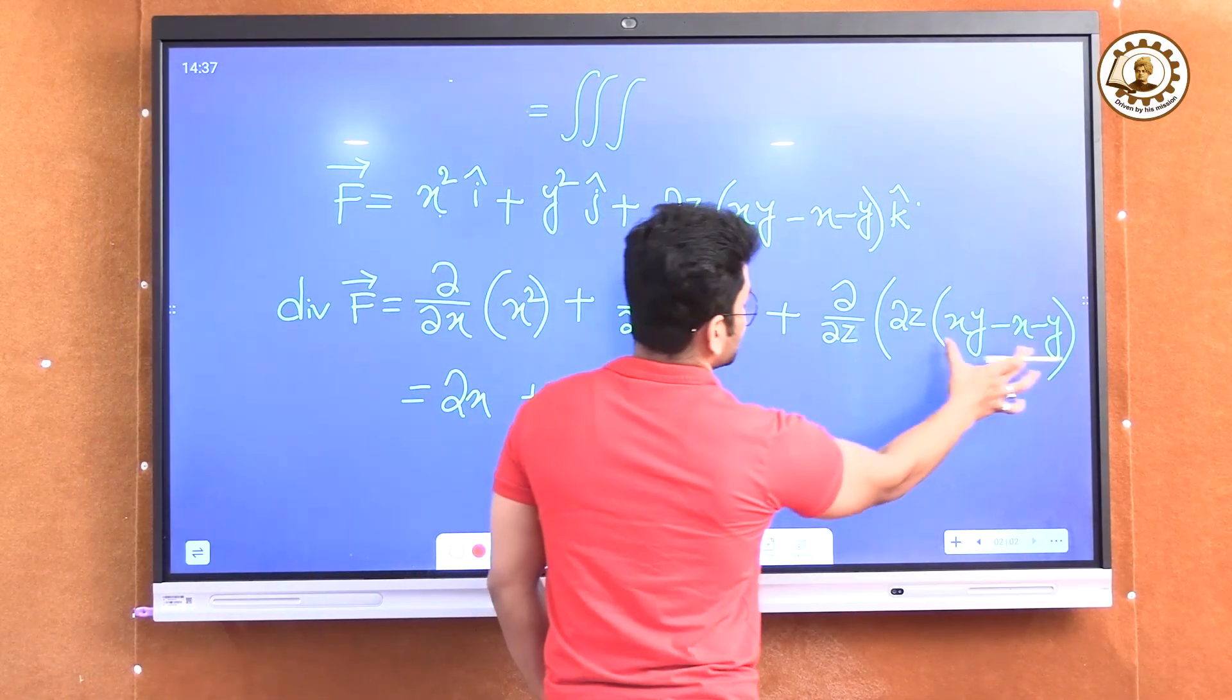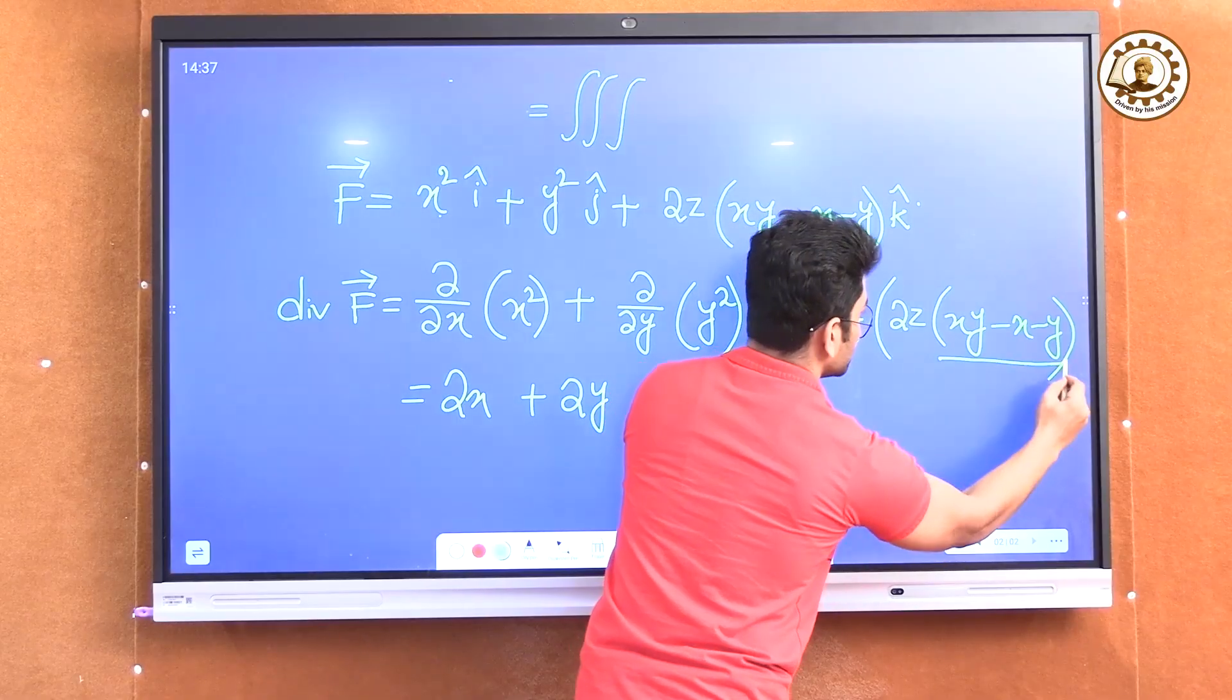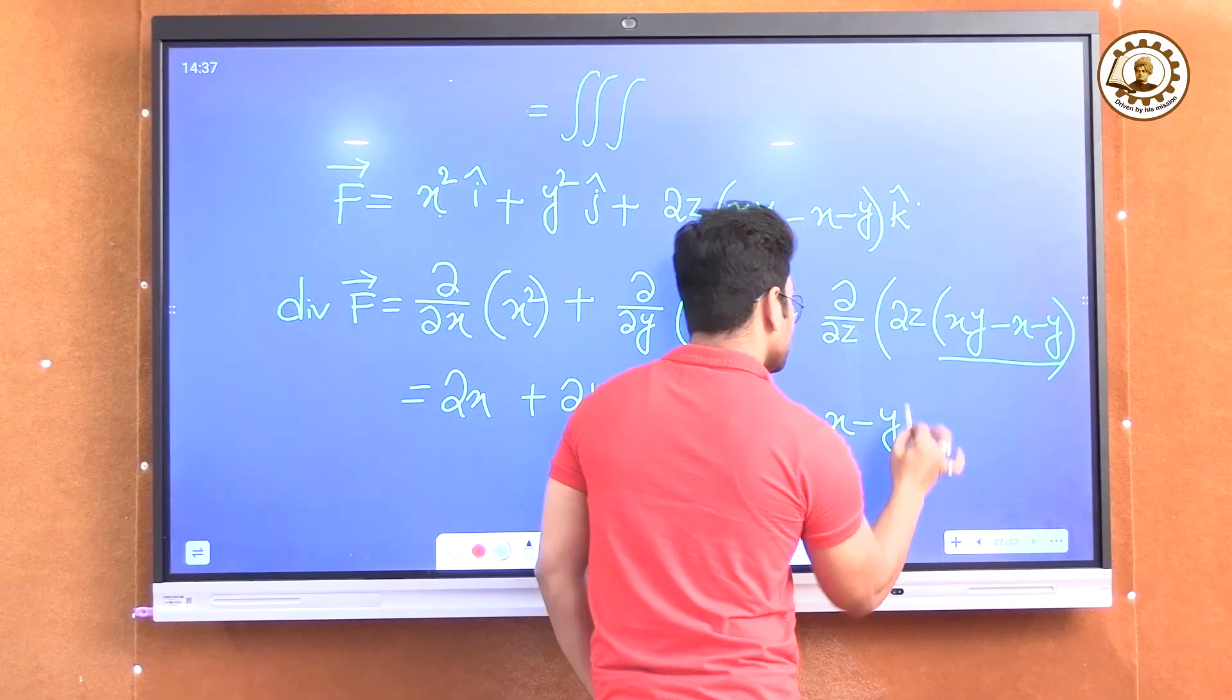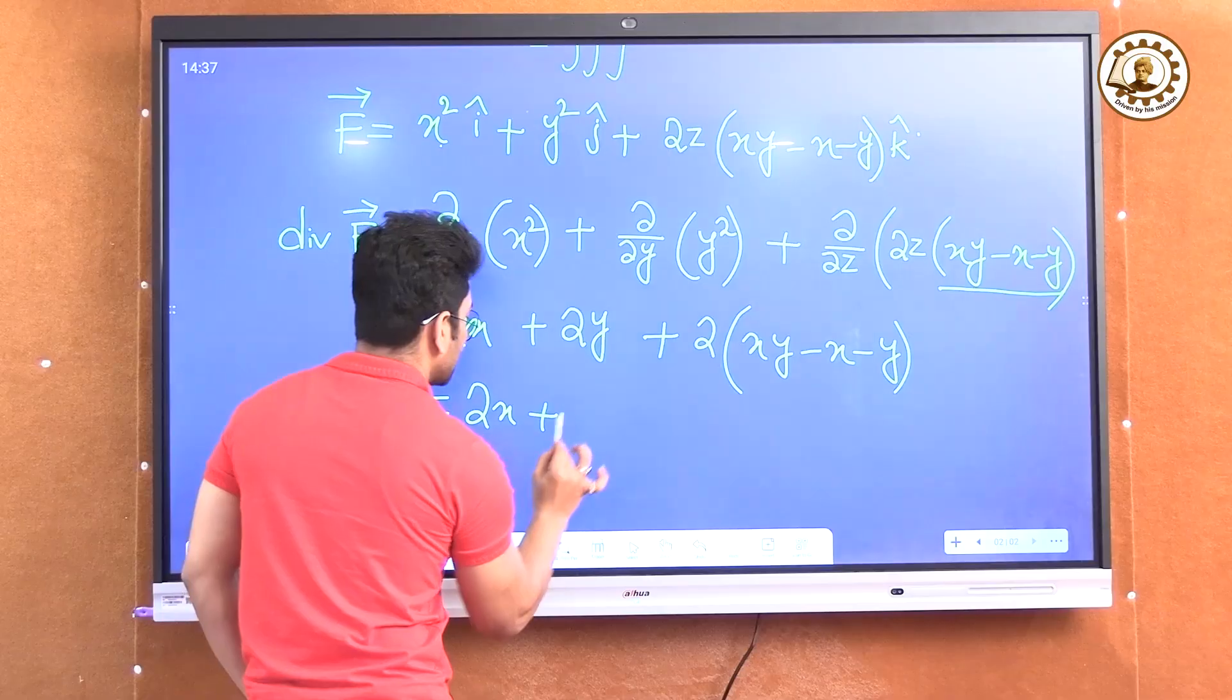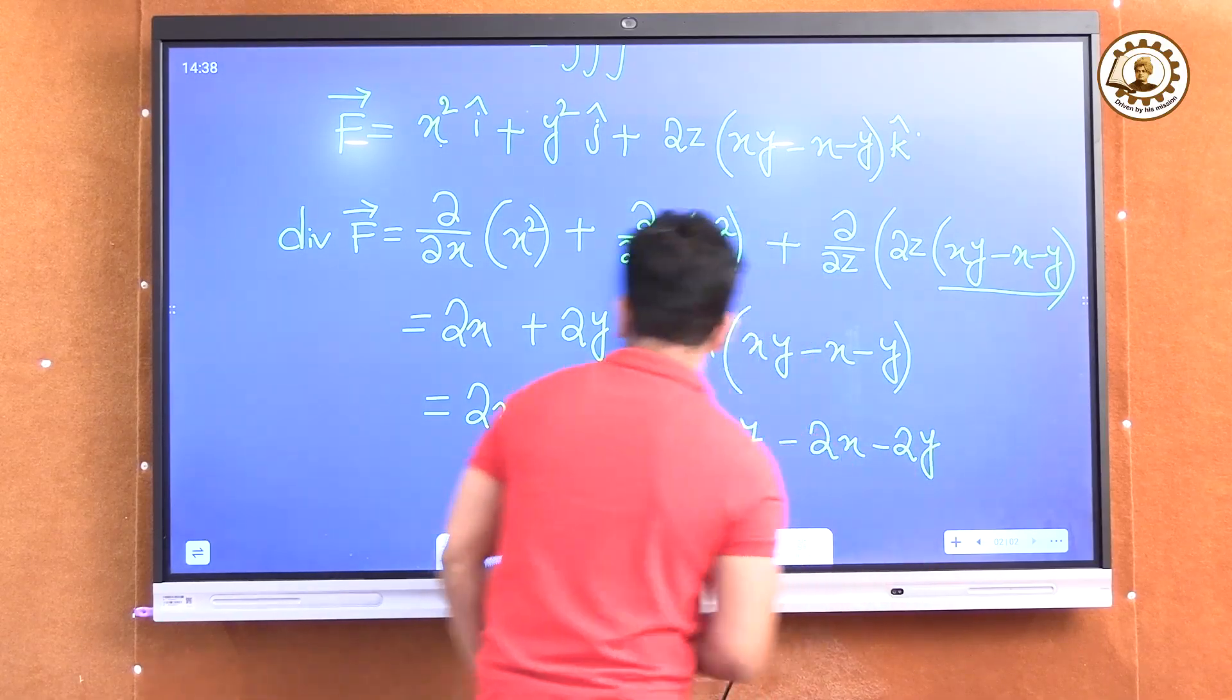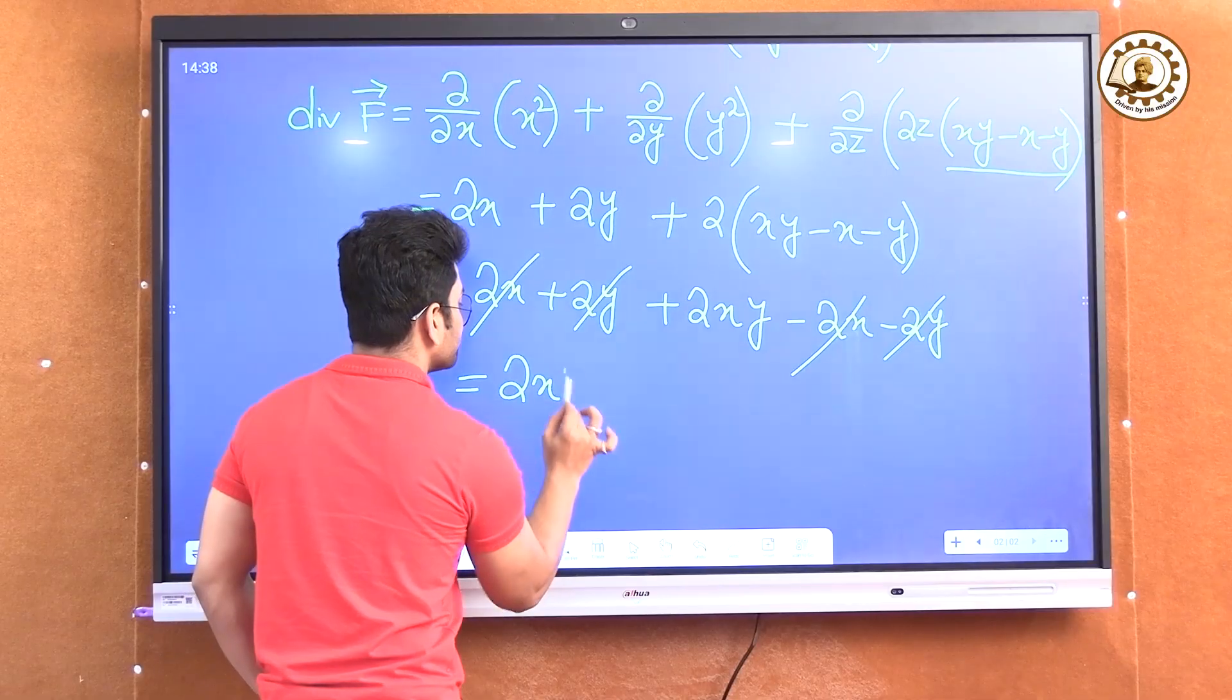Here, this entire expression has no term containing z, so this term should be treated as constant. That means this will be 2 into xy minus x minus y. If I open the bracket, it will be 2x plus 2y plus 2xy minus 2x minus 2y. Here 2x and 2x will be cancelled and 2y and 2y will be cancelled. So divergence of f equal to 2xy.